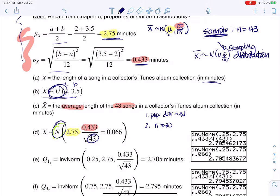So I can put the N here, and that allows me to use normal CDF or inverse norm, depending on what question is asked of you. For part E, they're asking for the first quartile.